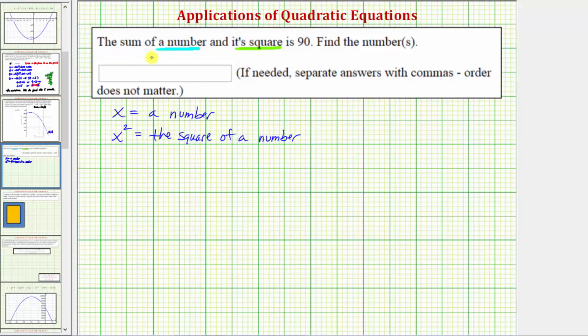So we're told the sum, which means addition, of a number and its square is 90. So to find the numbers, we need to solve the equation x plus x squared equals 90. Again, the sum of a number and its square equals 90.